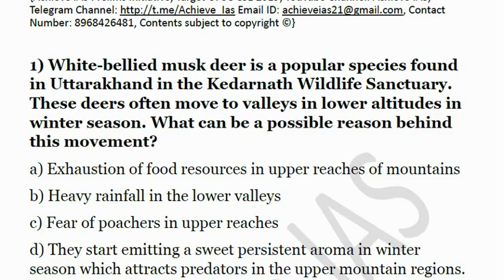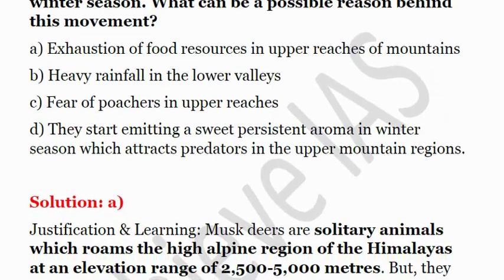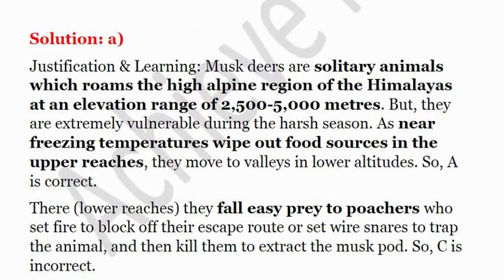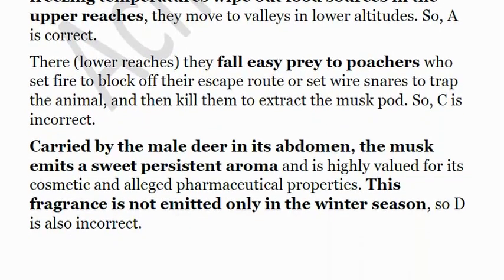They do emit a sweet resistant aroma — they have a certain chemical in their abdomen that helps them emit this aroma. But it is not emitted in winter season, so D is wrong. The answer is A. They are found at higher reaches from 2500 to 5000 meters and fall easy prey to poachers while they move towards valley areas in winter season.